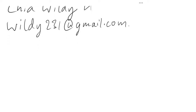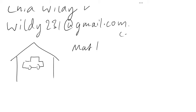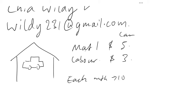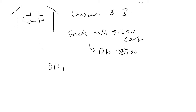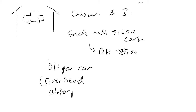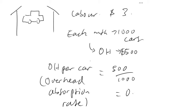Today we're going to follow up on the example from the last video. The example was a shop selling toy cars. Each toy car incurs a material cost of five dollars and a labor cost of three dollars. Each month this shop makes a thousand toy cars, and the monthly overheads are five hundred dollars. So the overhead per car — the overhead absorption rate — is 500 divided by 1000, which gives 50 cents per car.